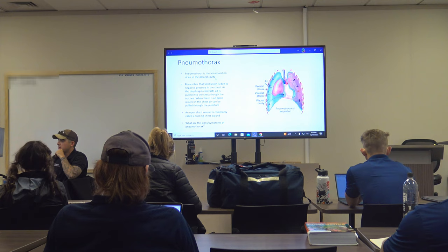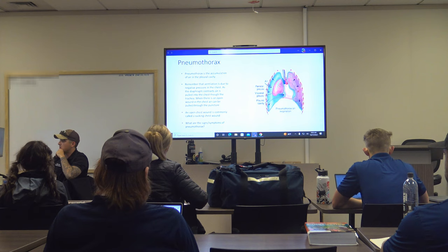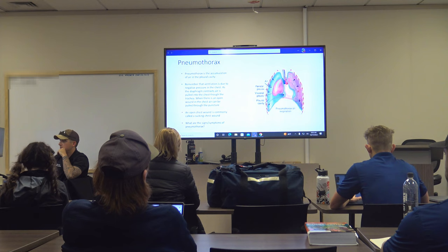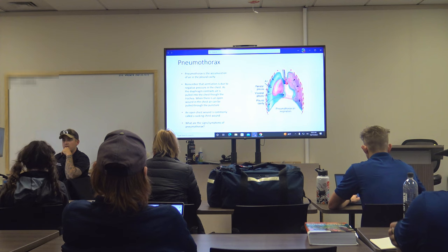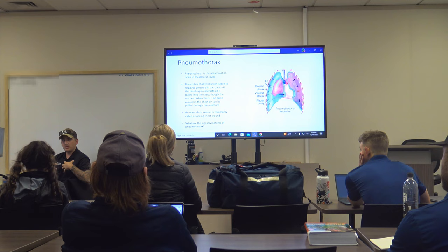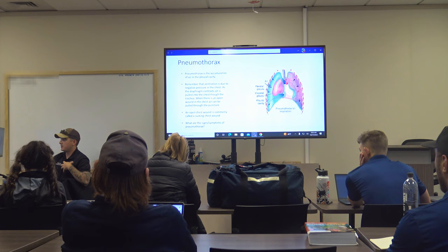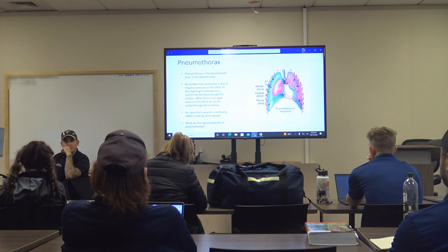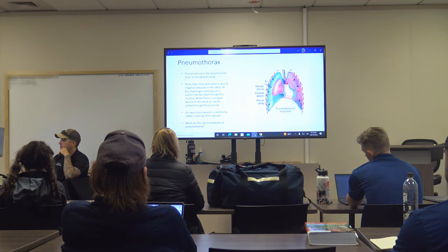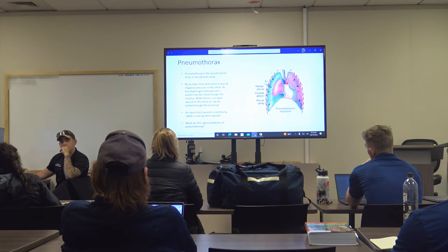Signs and symptoms of a pneumothorax include difficulty breathing, unilateral chest rise — only one side of the chest moving — dropping SpO2, and increasing heart rate. Paradoxical movement is when the chest moves in two different directions, whereas unilateral means only one side moves at a time. Blood pressure will initially increase due to the faster heart rate.